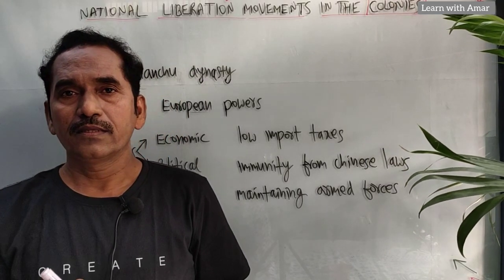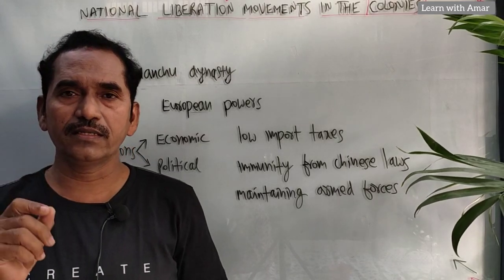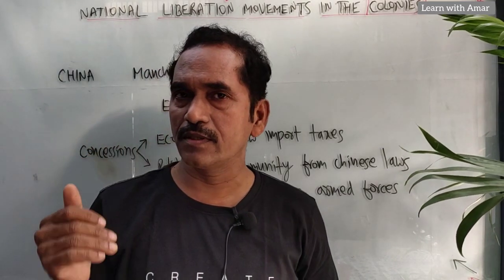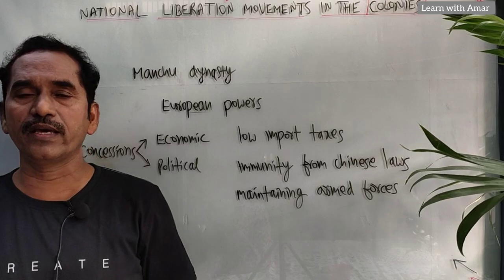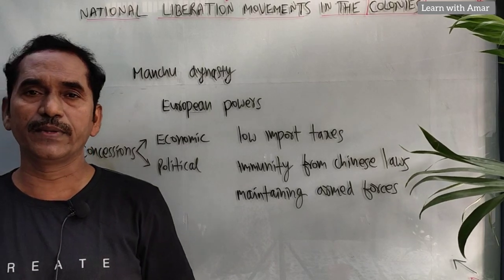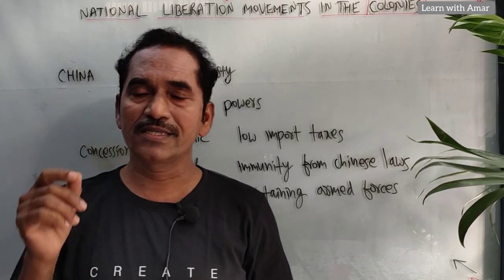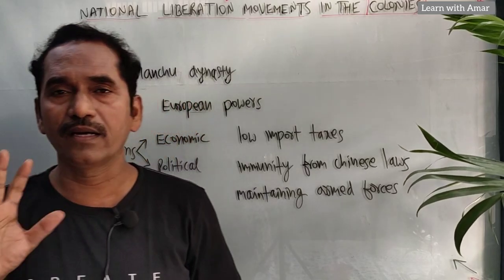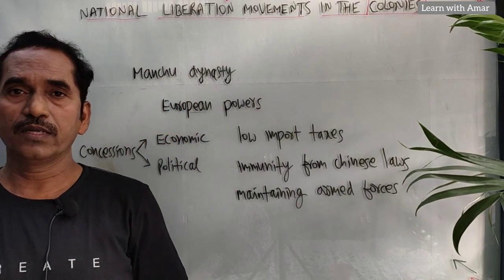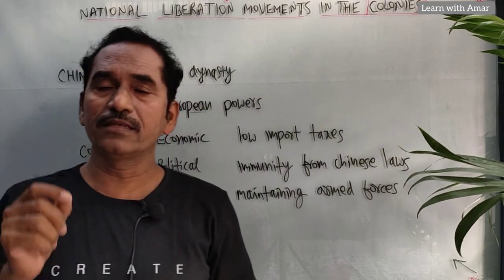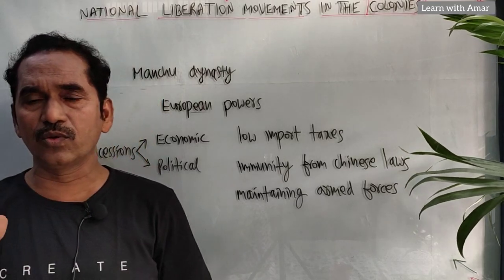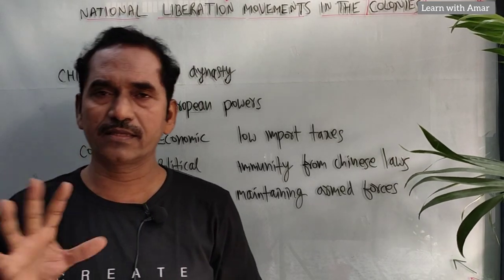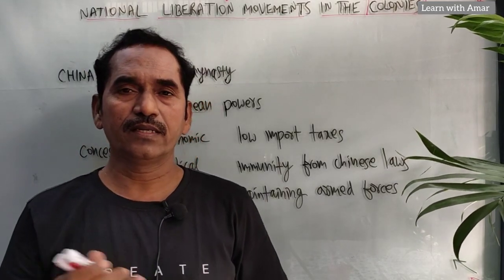Now, take China. According to the map in the year 1914, China was known as an independent country. But actually, China was occupied by many European countries — Britain, France, Germany, USA — all those occupied China.